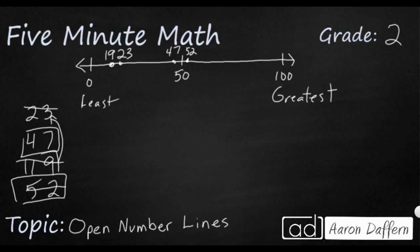What this does is show us how close numbers are to each other. So 19 and 23 are both pretty close to each other — they only have a difference of 4. And 47 and 52 are very close to each other — they only have a difference of 5. It wouldn't make sense to put 52 up near 100, because it's going to be very close to 50, not close to 100.